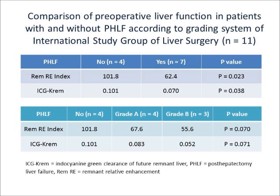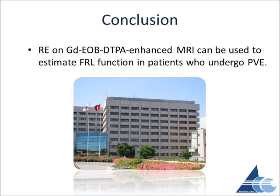However, from the viewpoint of the differences between patients with and without PHLF, the p-value of the remnant RE index tended to be better than that of ICG-K-REM. Therefore, RE imaging might be useful for predicting the risk of PHLF in patients who undergo PVE. In conclusion, the present study indicated that relative enhancement on EOB MRI can be used to estimate the FRL function in patients who undergo PVE. Thank you for listening.